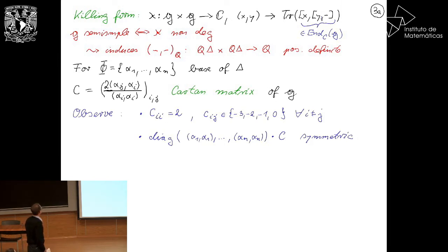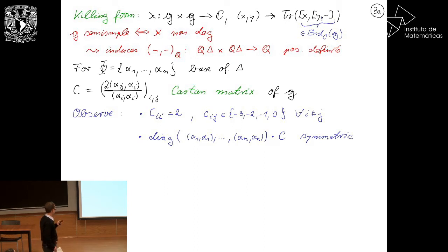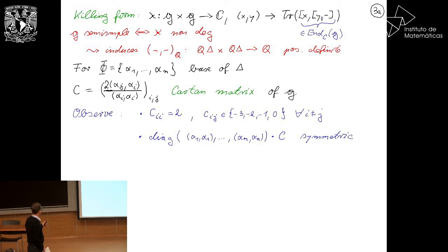Some easy observations: the diagonal entries of the Cartan matrix are always two by definition, and the off-diagonal entries are non-positive integers between minus three and zero. If we multiply the Cartan matrix by the diagonal matrix of square lengths of simple roots, then it becomes symmetric. One can recover the entire algebra from just this Cartan matrix.